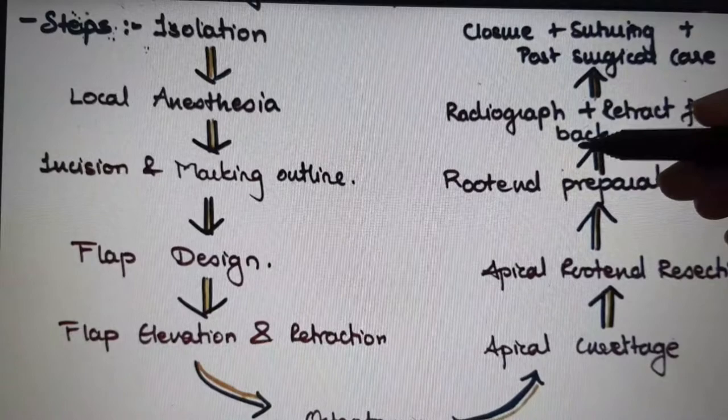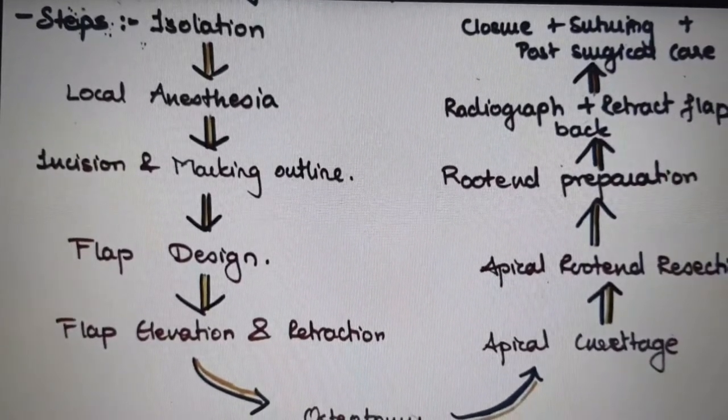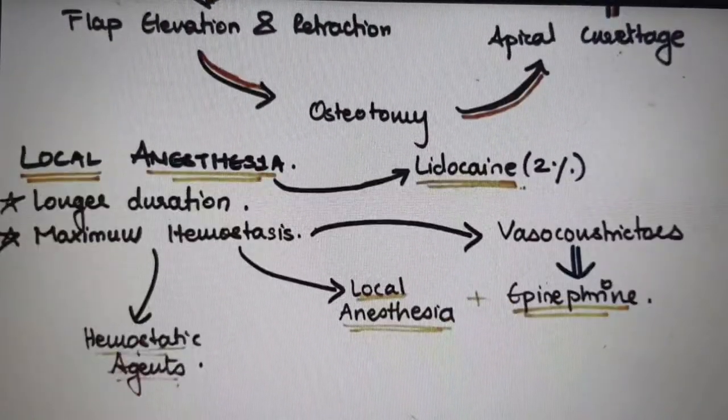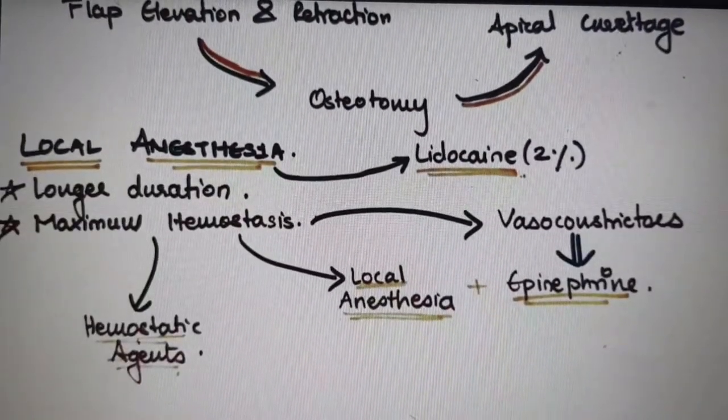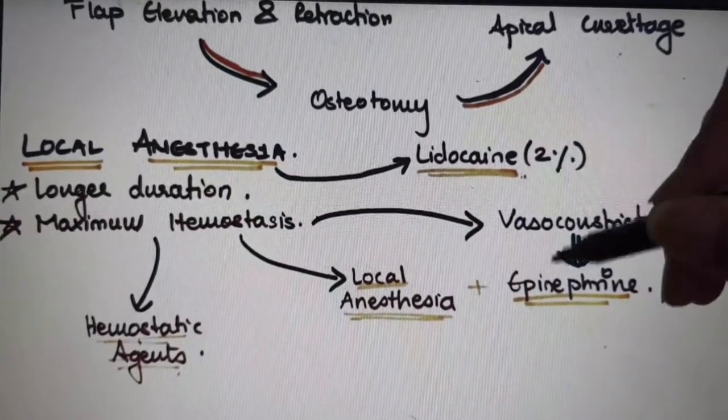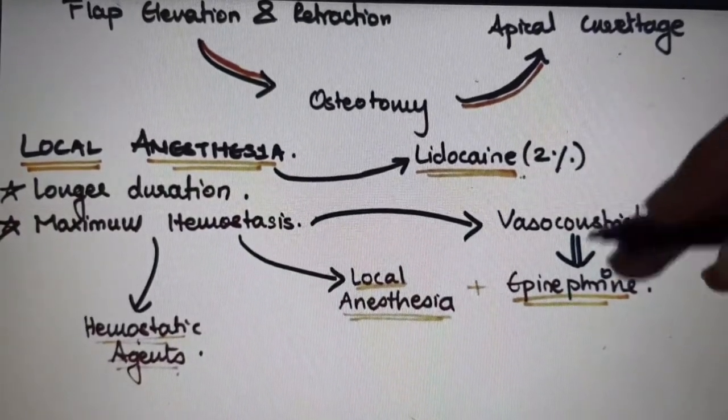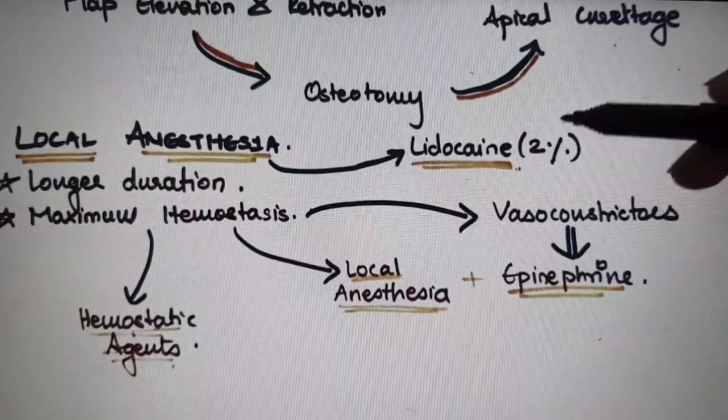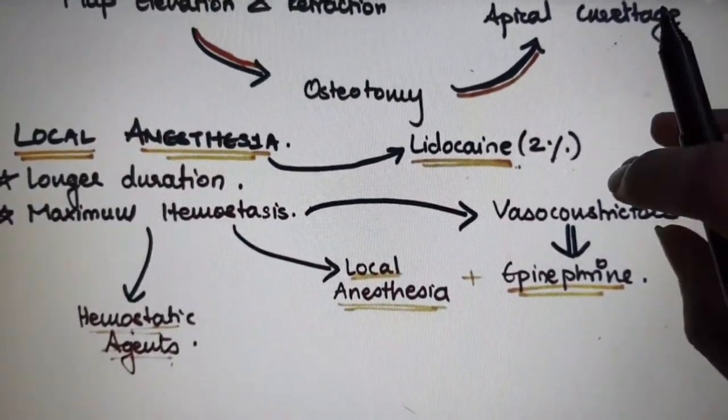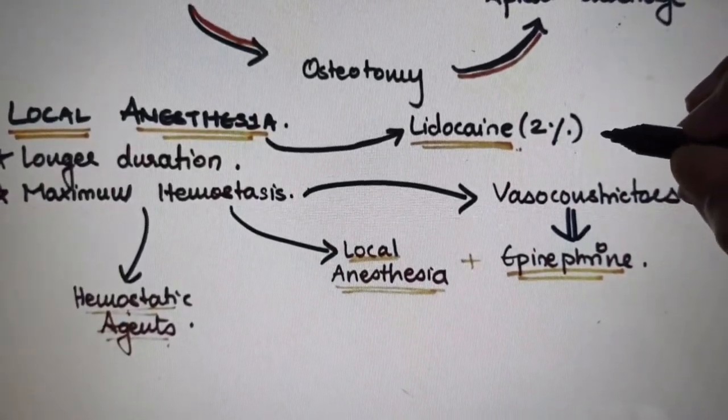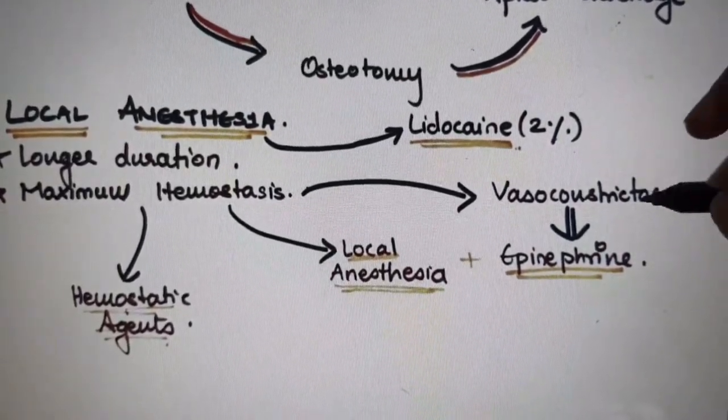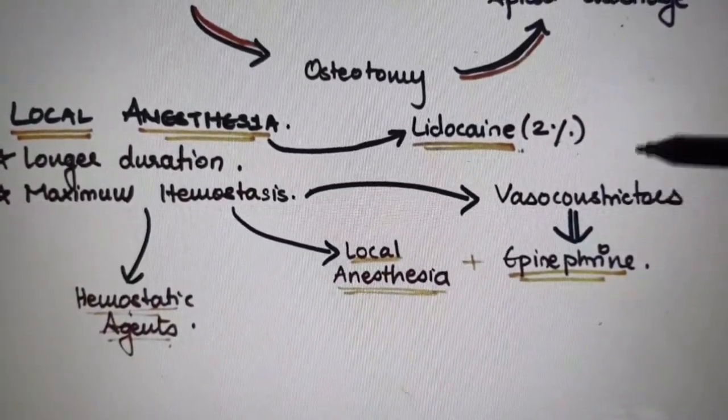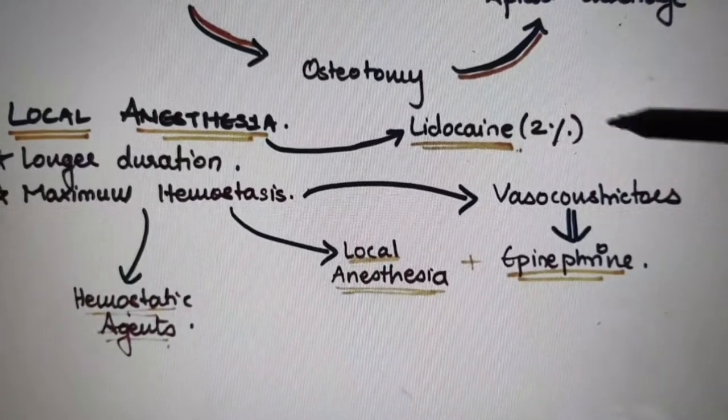In local anesthesia, LA is injected at multiple sites both buccal and lingual, and even palatal injections are given to achieve profound anesthesia and effect of hemostasis. 2% lidocaine is the choice for this type of procedure, with 1:50,000 epinephrine as a vasoconstrictor.